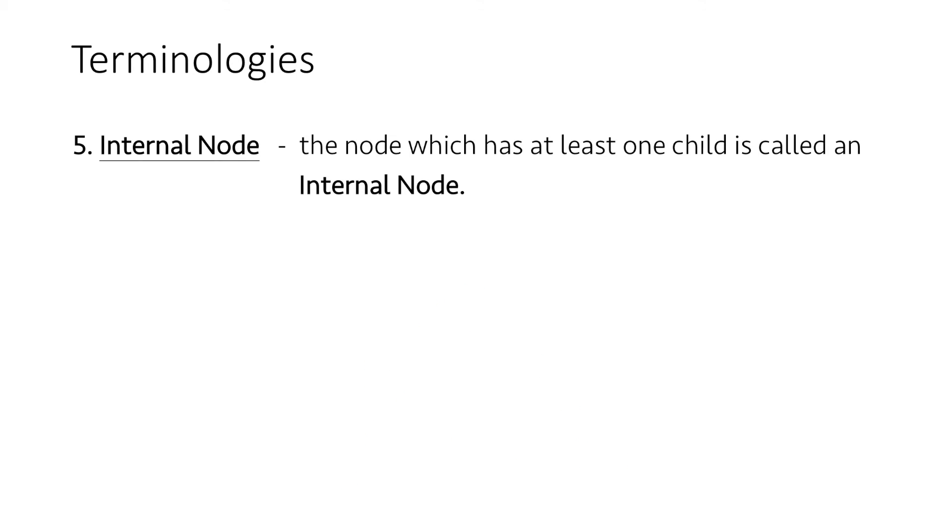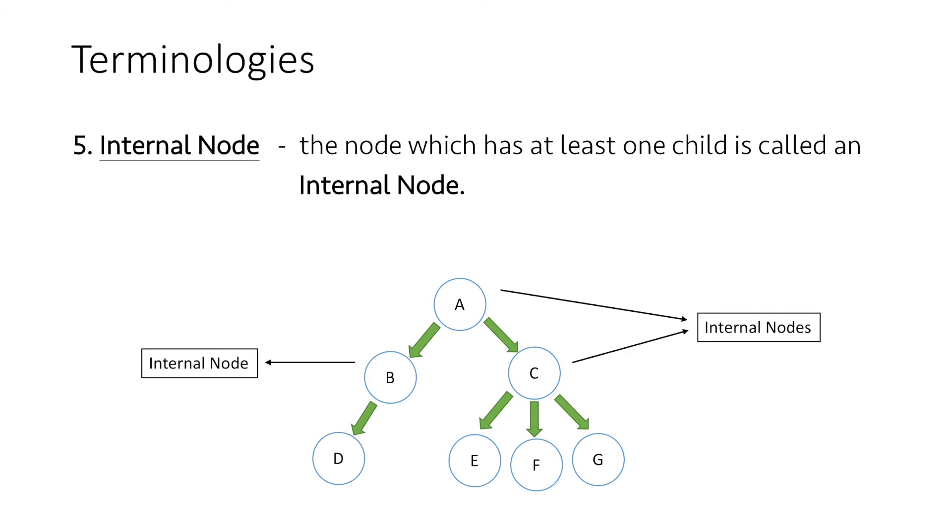Moving forward, the node which has at least one child is called an internal node. In our example, nodes A, B, and C are internal nodes as they have at least one child.